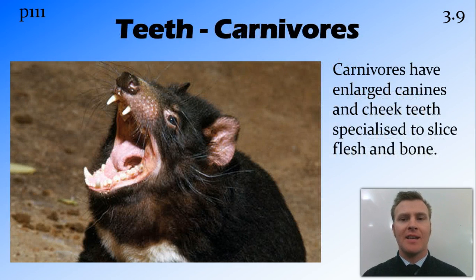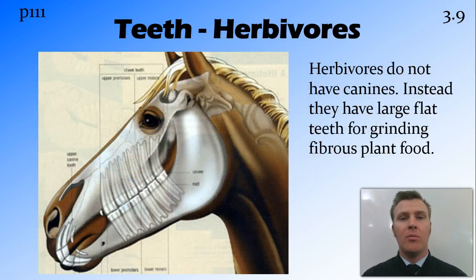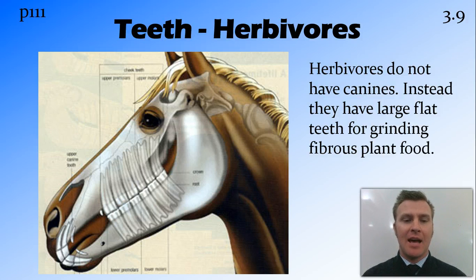Carnivores, on the other hand, have enlarged canines for tearing meat as well as specialised cheek teeth used for slicing flesh and bone. Herbivores, animals that only eat plants, don't have canines at all. Instead, they have flat double teeth which they use for grinding and chewing fibrous plants.